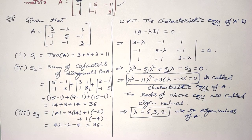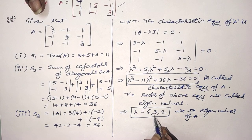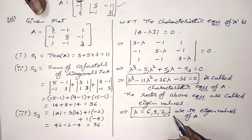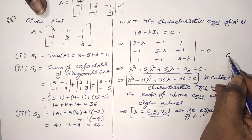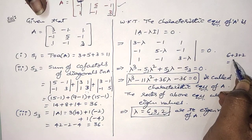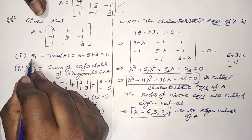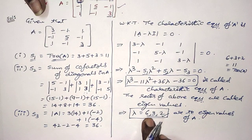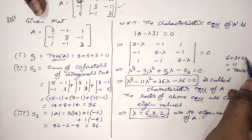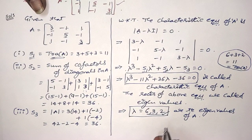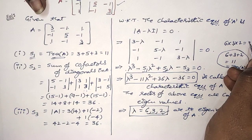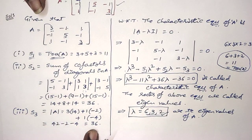Don't forget one important thing: after getting eigenvalues, check whether they are correct. The sum of eigenvalues must equal the trace of A. Here, 6 plus 3 plus 2 equals 11, which matches the trace. Also, the product of eigenvalues must equal det(A). Here, 6 times 3 times 2 equals 36, which equals our det A. Both checks pass.